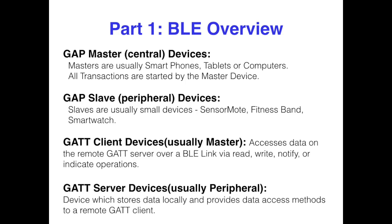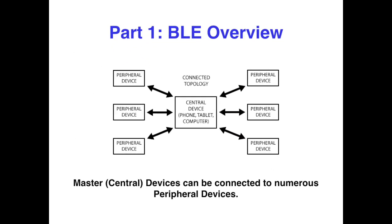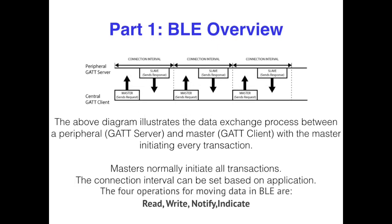Servers commonly hold the data of interest, where clients display and/or perform some function on the data. This is the general connection topology. A GAP central device can connect to many peripherals, whereas a peripheral can only connect to one central device at a time. This diagram shows the GATT interactions between the server and client — a very generalized view that gives an idea of how clients and servers interact.